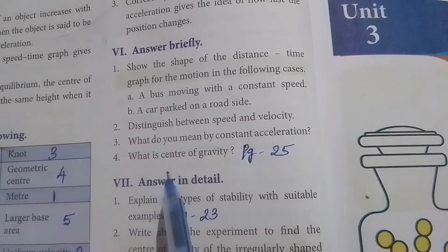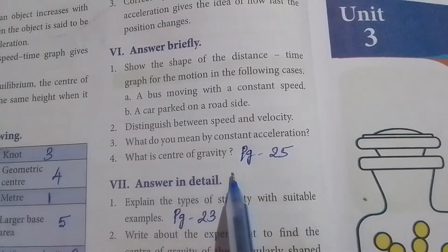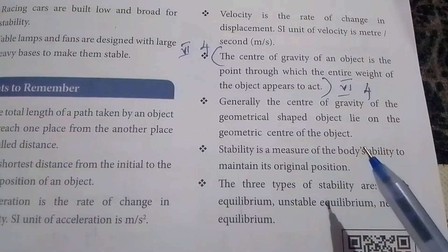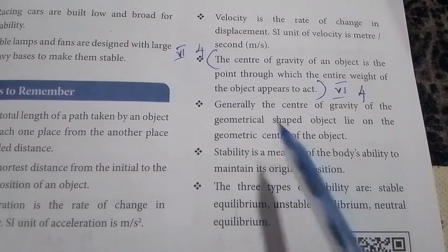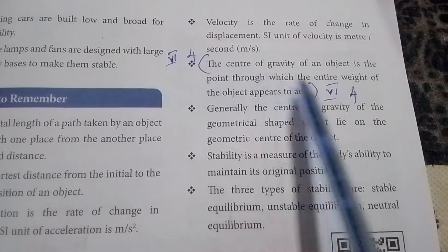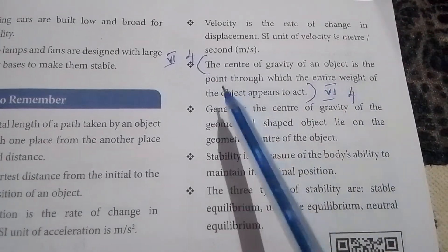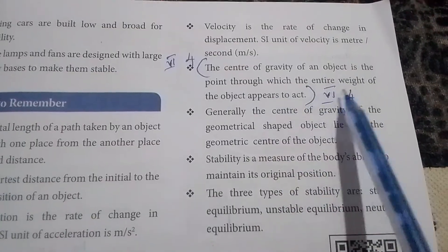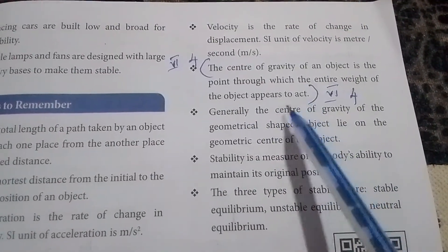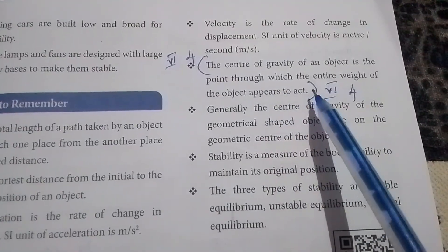Fourth question: What is center of gravity? Take page number 25. The center of gravity of an object is the point through which the entire weight of the object appears to act.